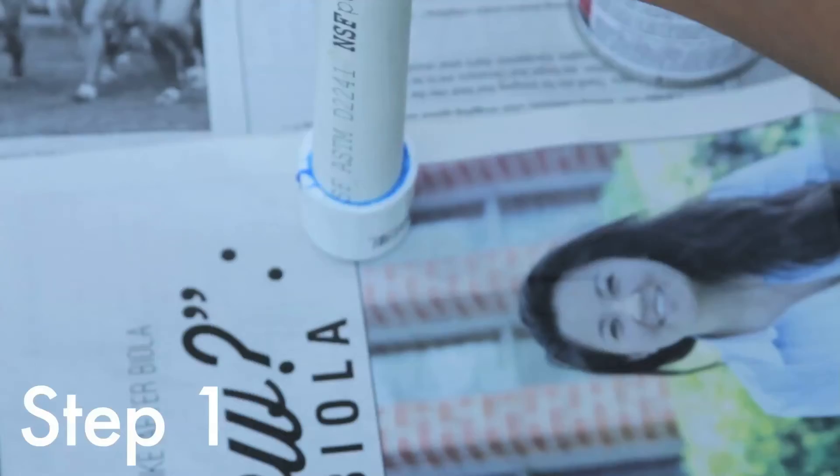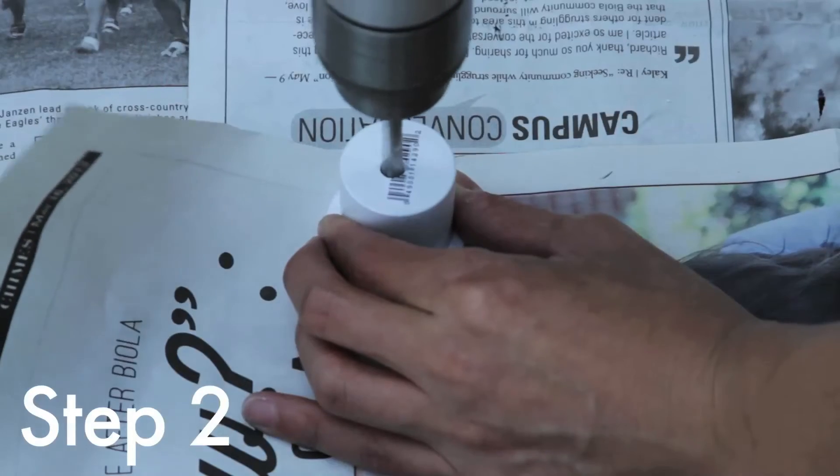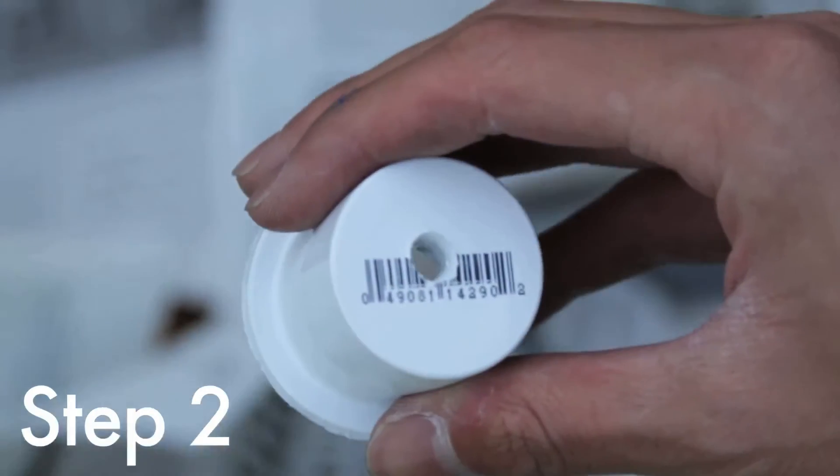Now connect the end cap to the 2 foot piece of PVC. Then drill a 1/4 inch hole in the middle of the plug and connect it to the coupling. This will be your headpiece.